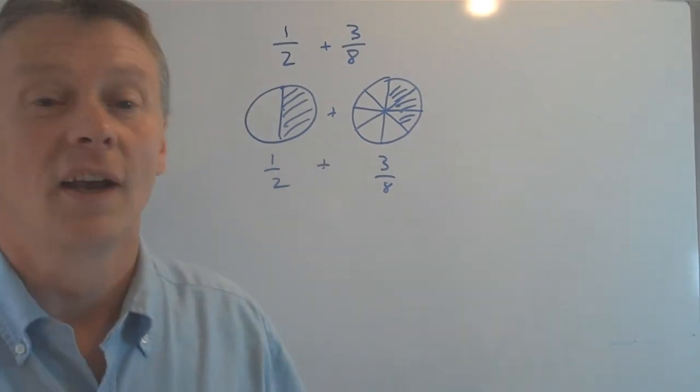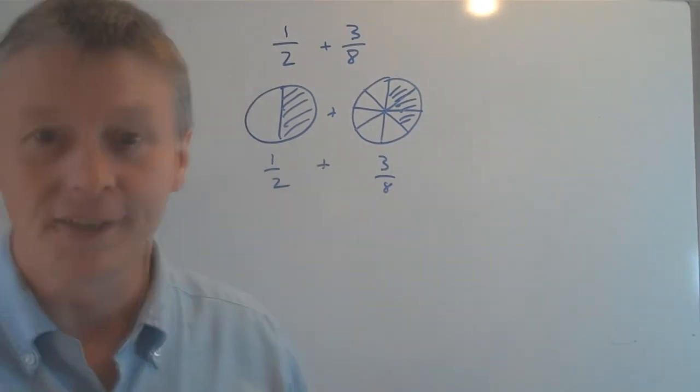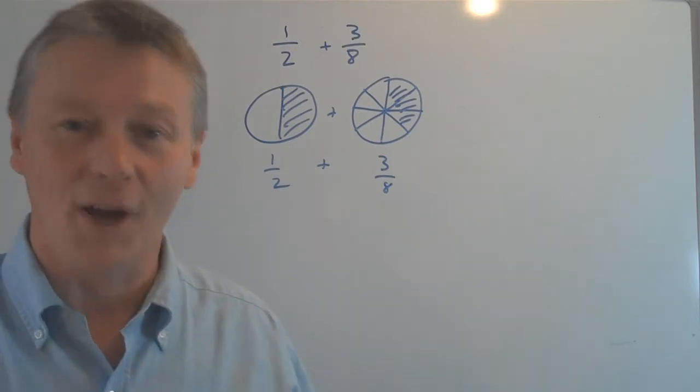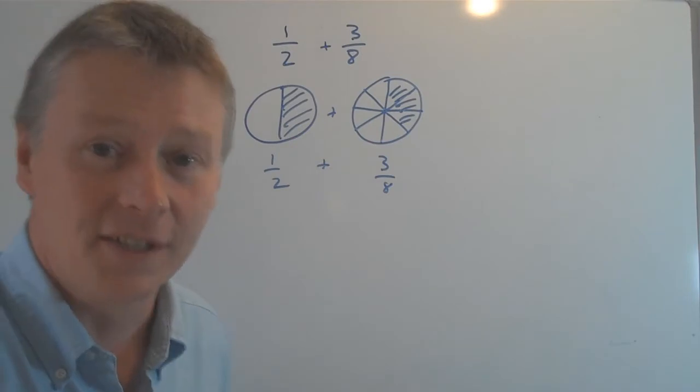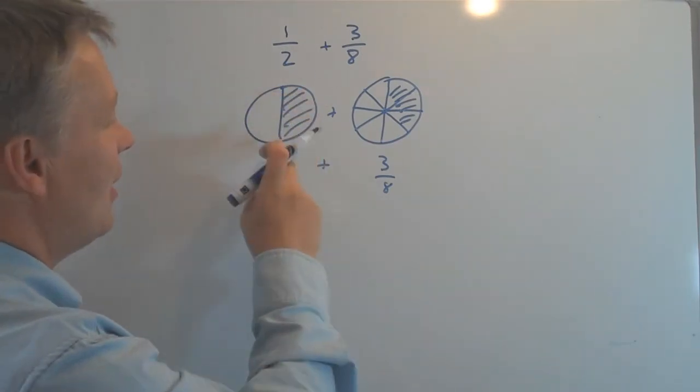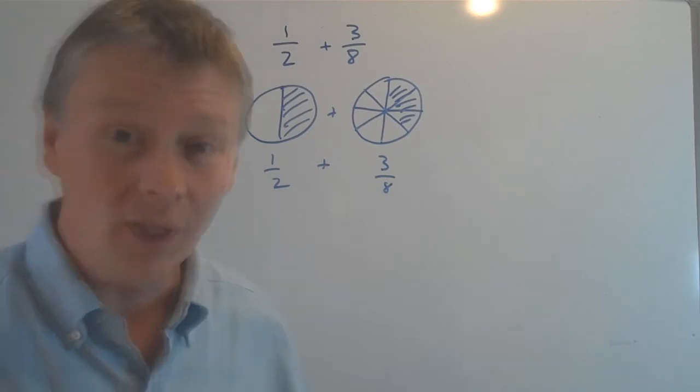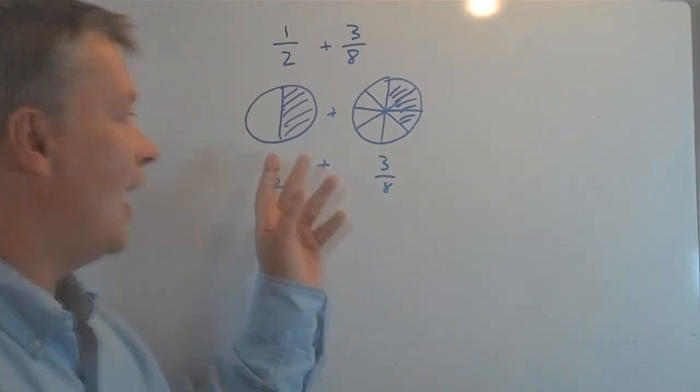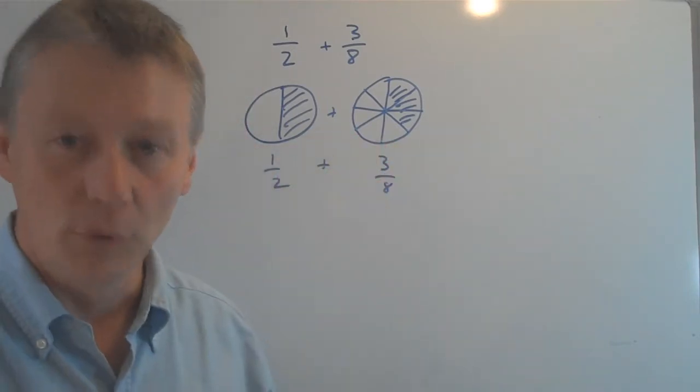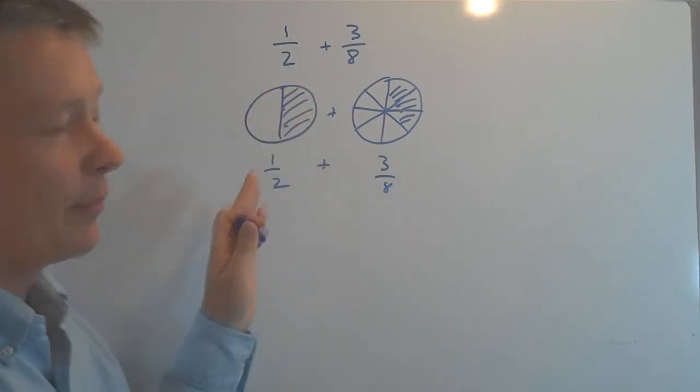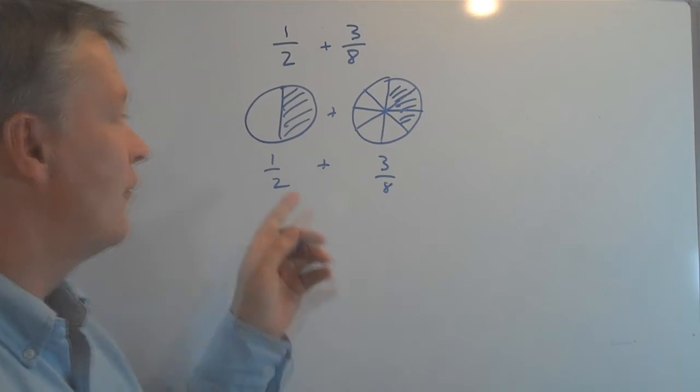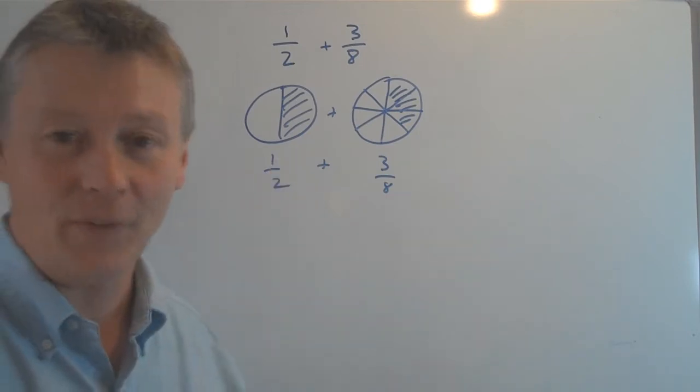And we want to know how much has been eaten altogether. So the way to do that, the most easy way to do that is to look at this half and look at this three-eighths. In order for me to add those two together, it would be a lot simpler for me to have this type of pizza or this piece of pizza divided into eighth pieces.